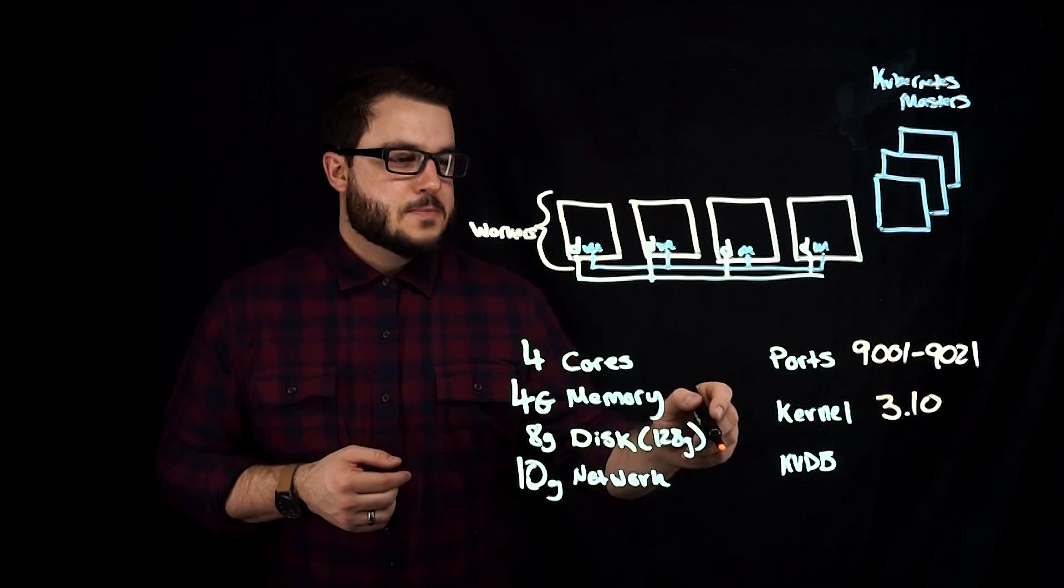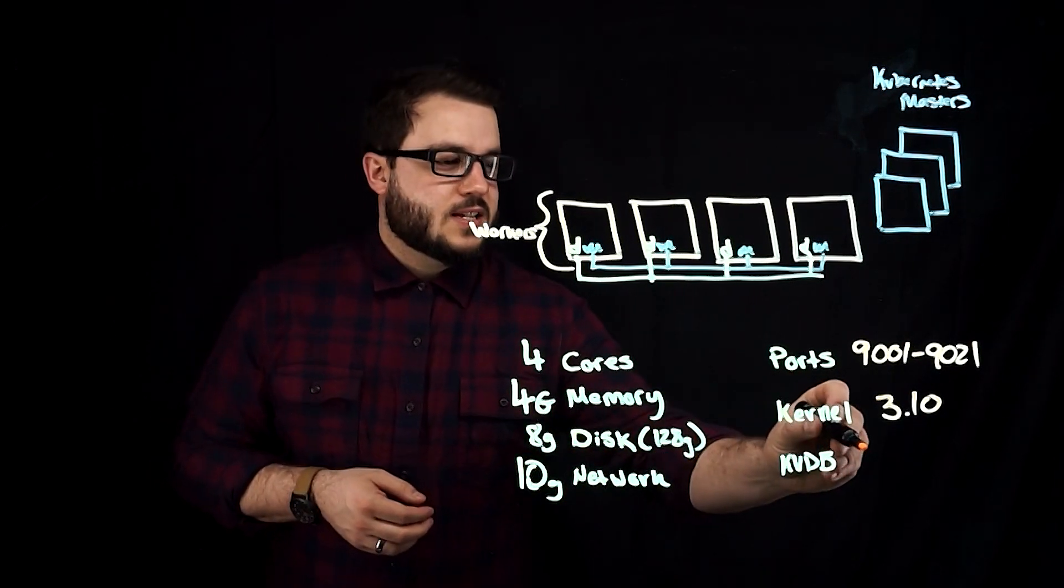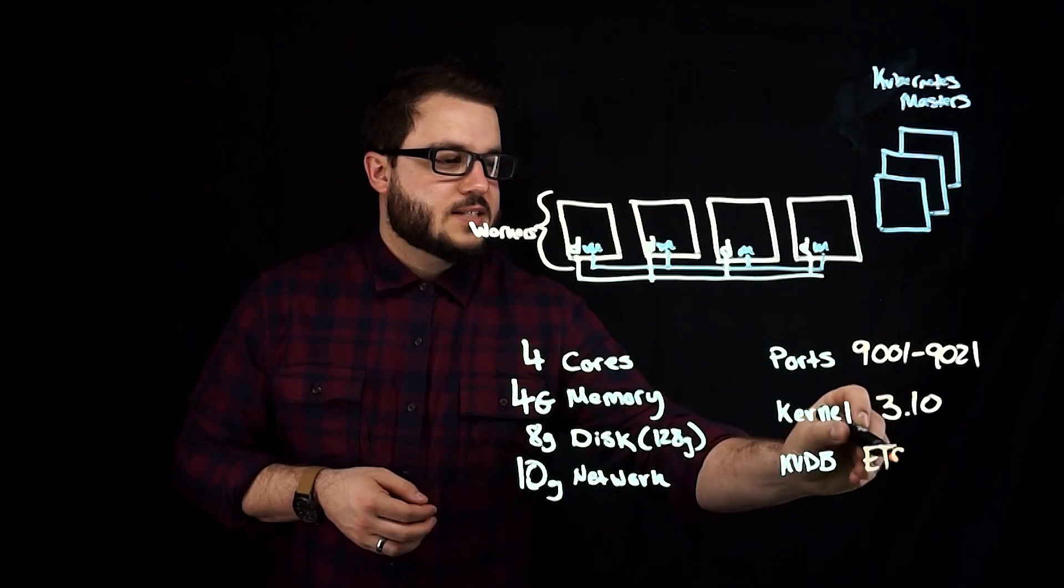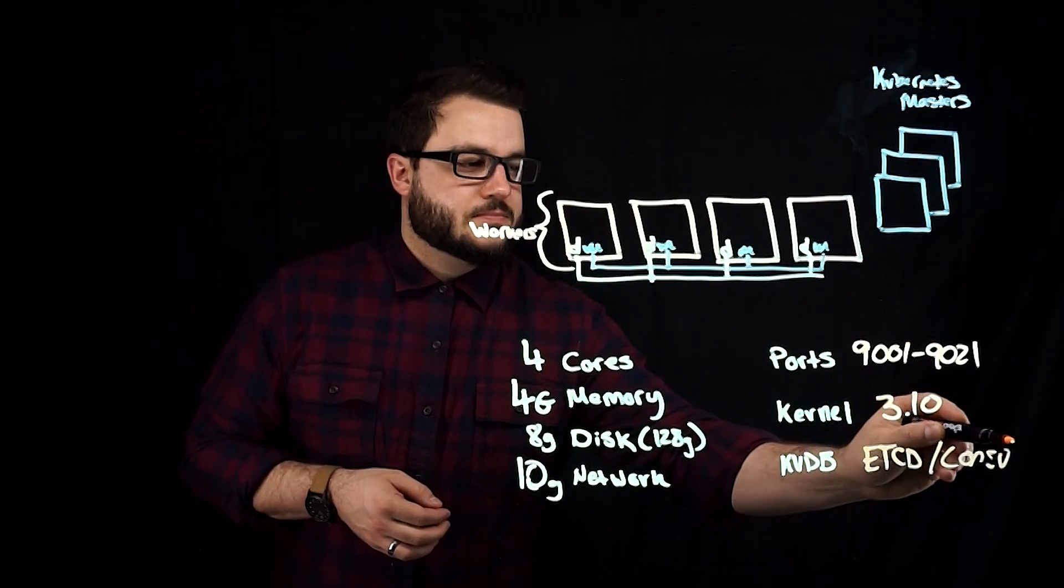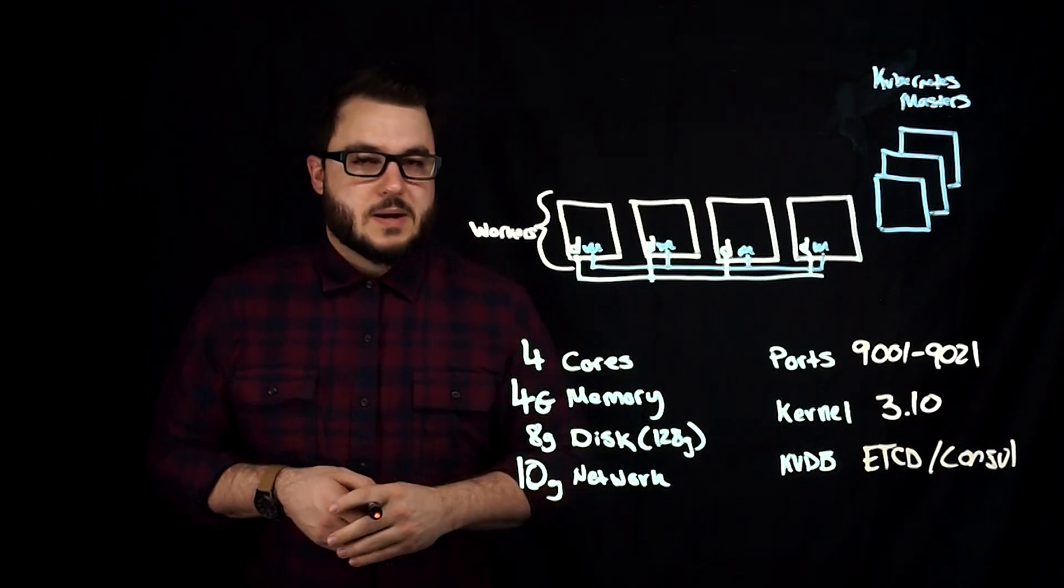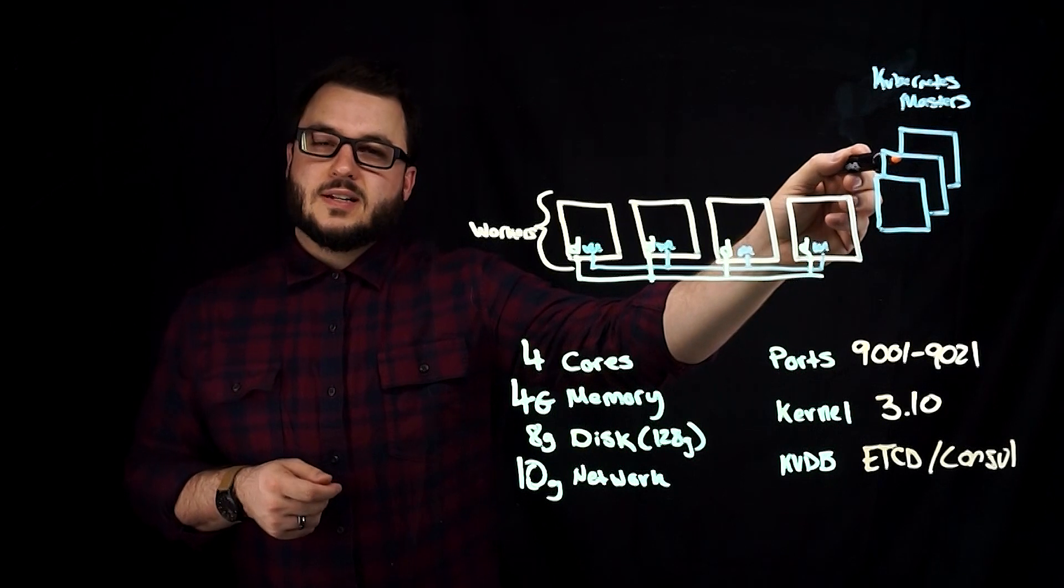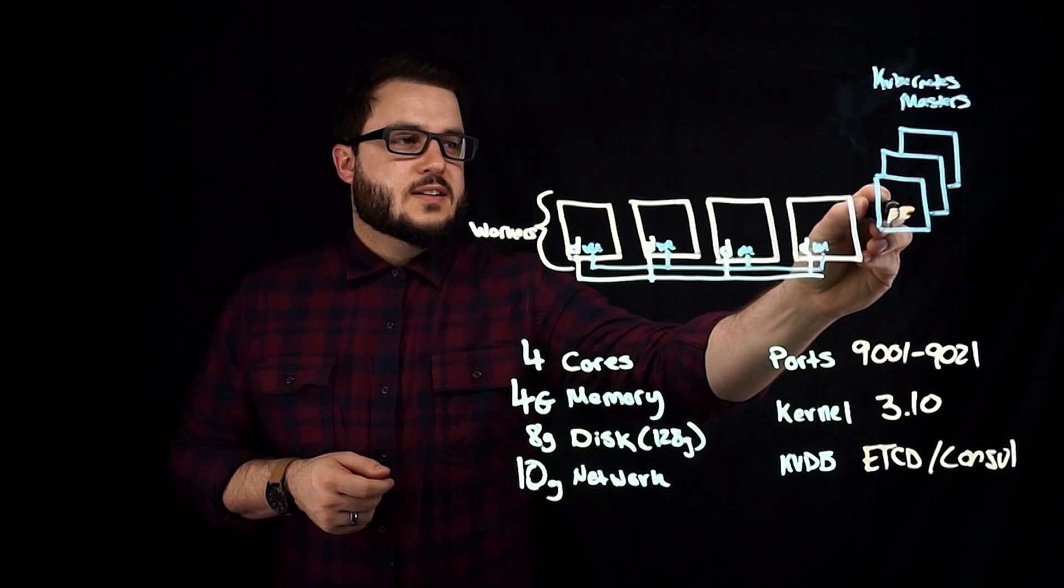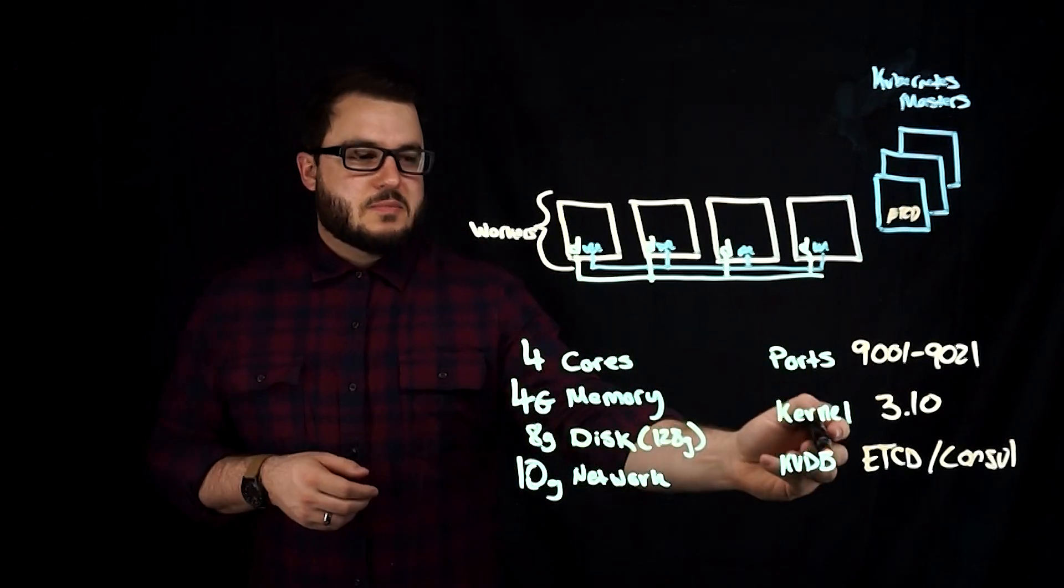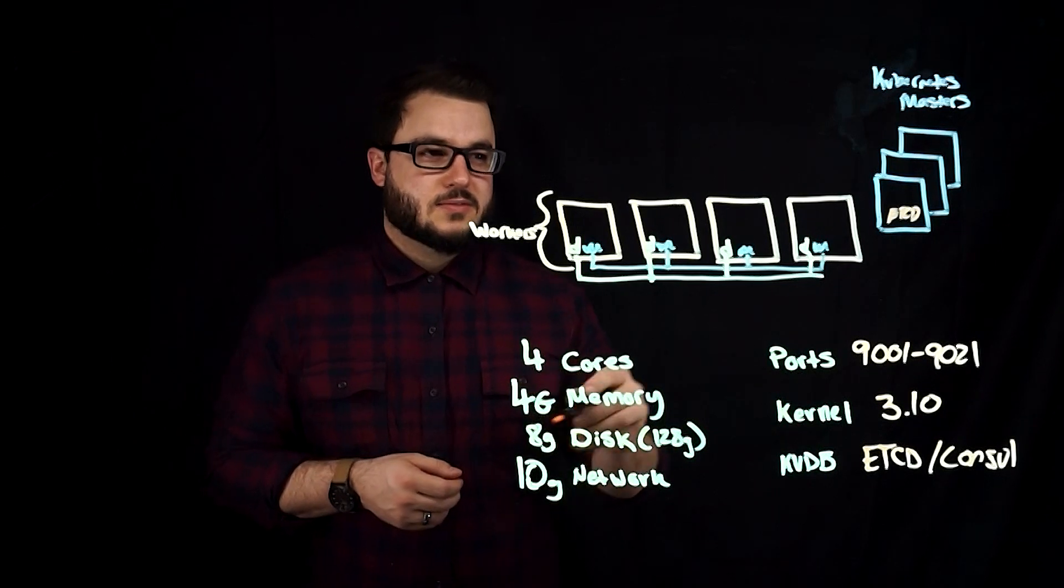Key value store database, this is either etcd, definitely the most common, or Consul from HashiCorp, also an option. Your Kubernetes cluster probably runs etcd on the masters. But keep in mind, this key value database is completely separate.